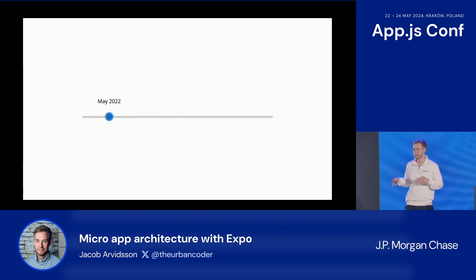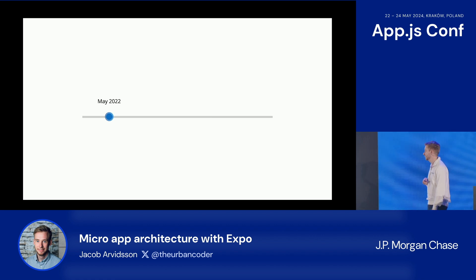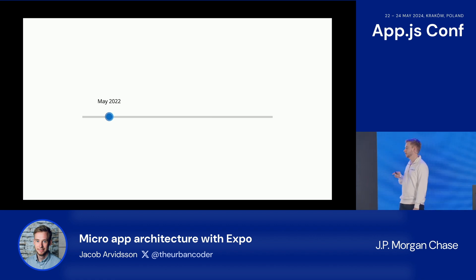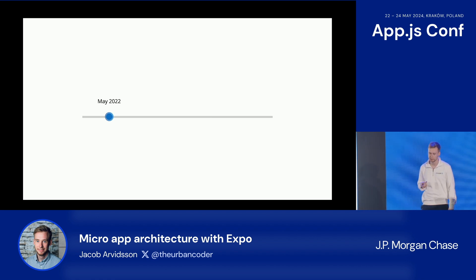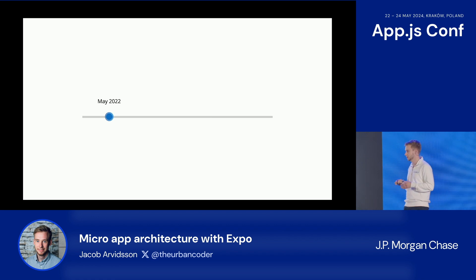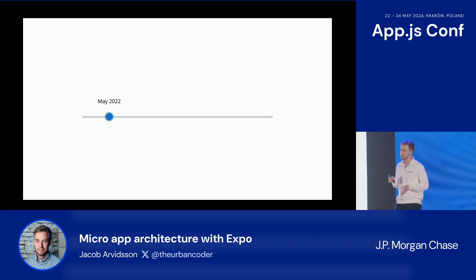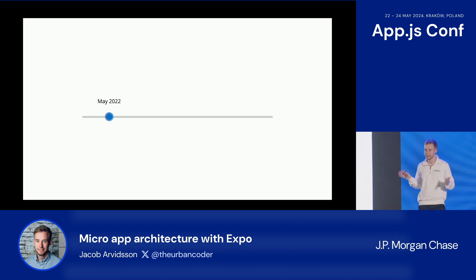Two years ago, I came here for the first time to AppJS conference, not as a speaker, just as an attendee. At that point, we had launched Chase Bank in the U.K. around six months before, so we were still quite a small bank. We had around 100,000 users and a few front-end teams with a few front-end engineers in each, but everything still felt quite small.